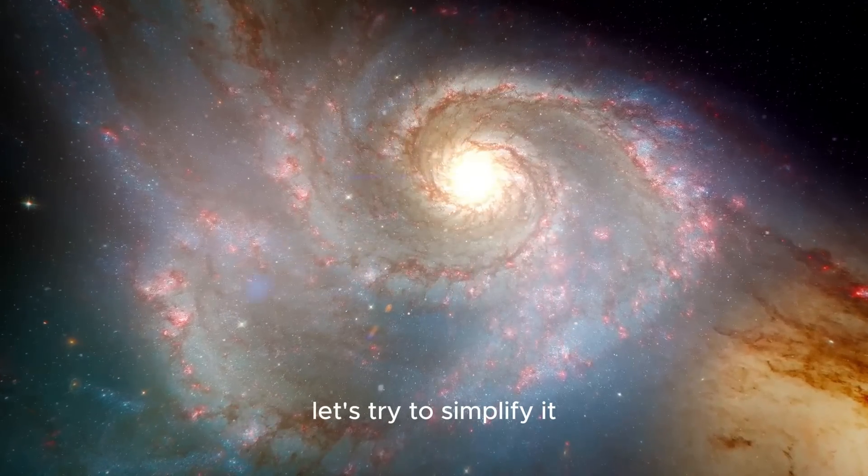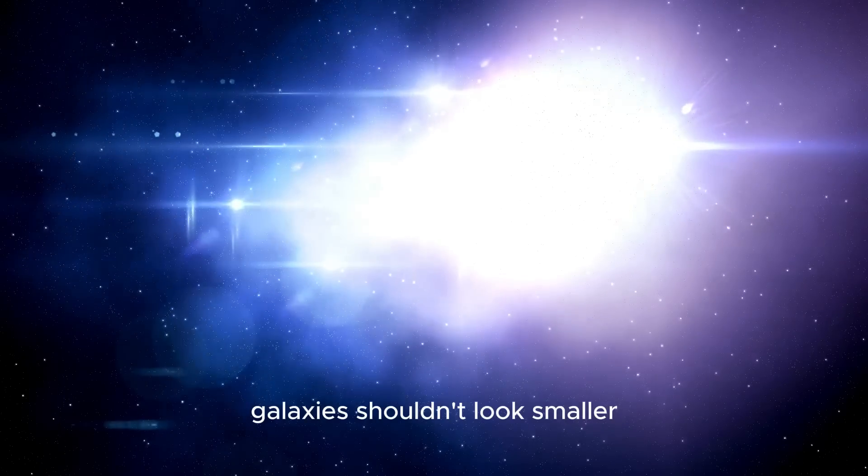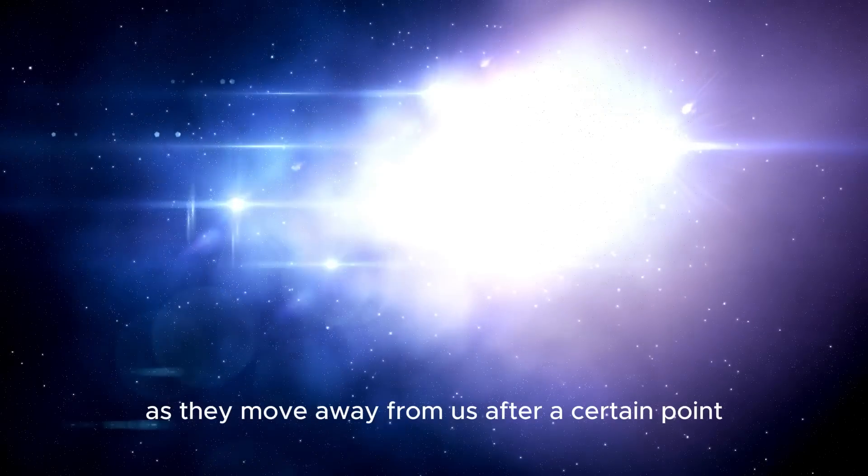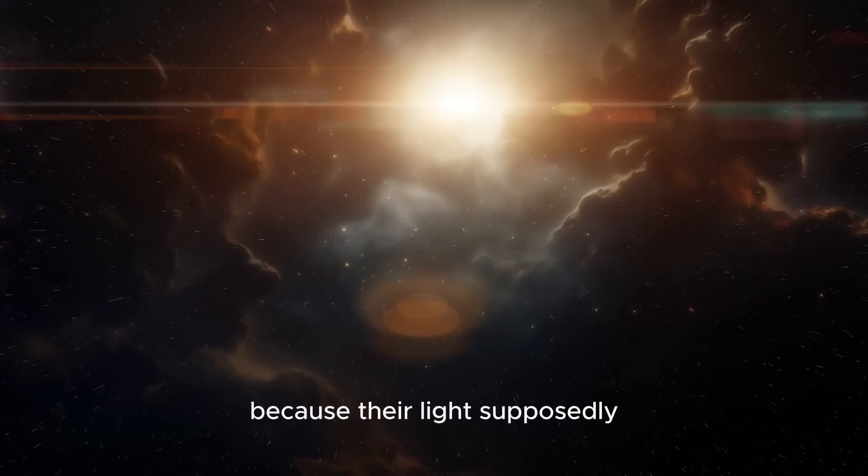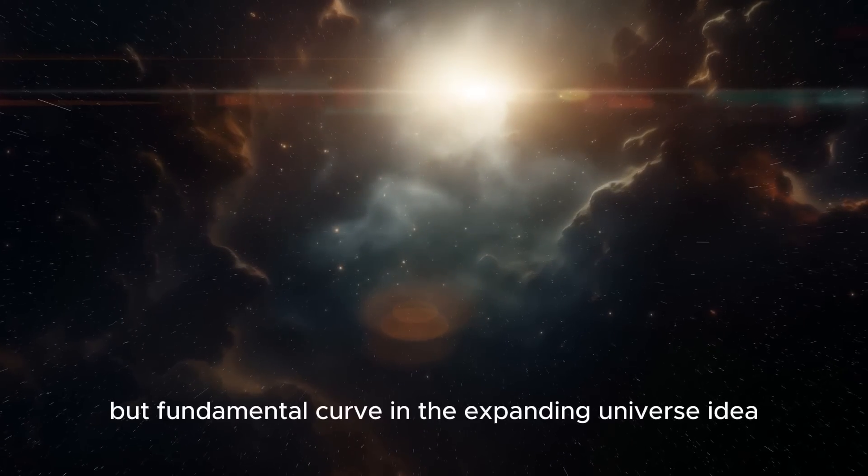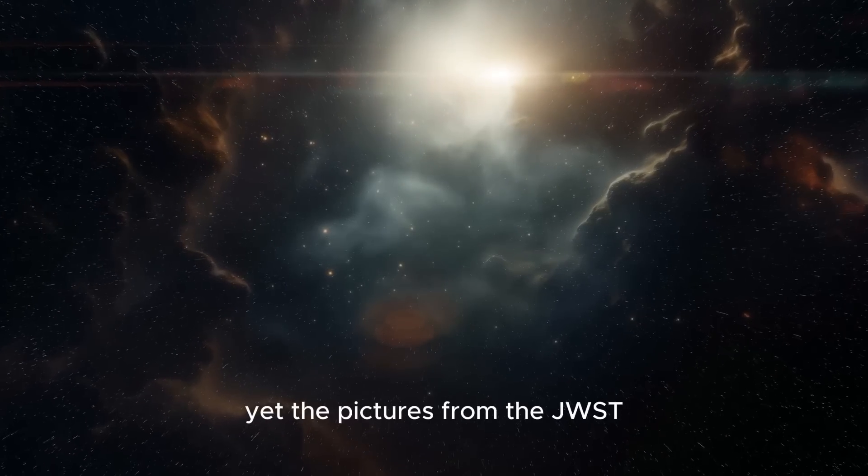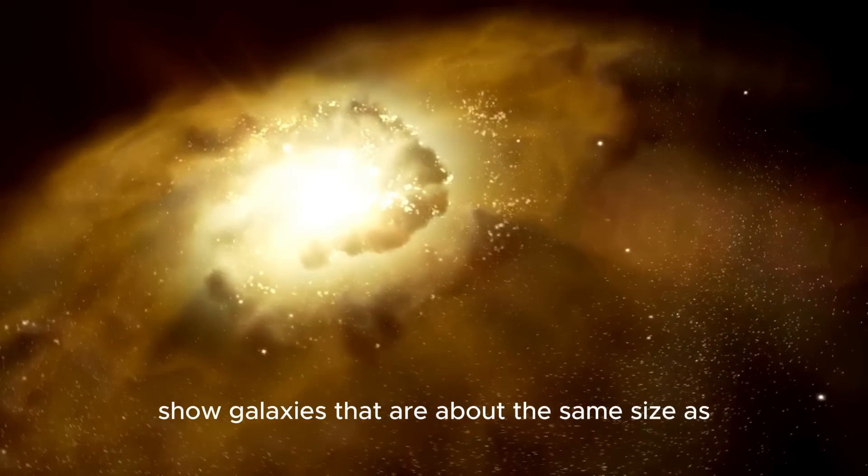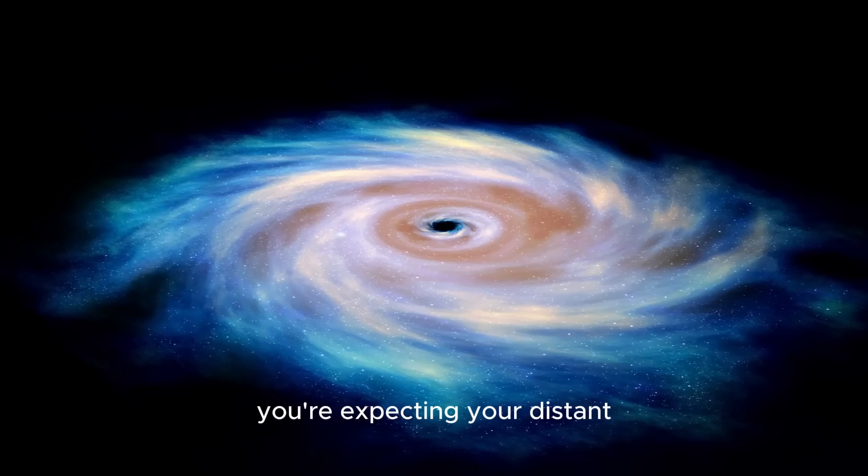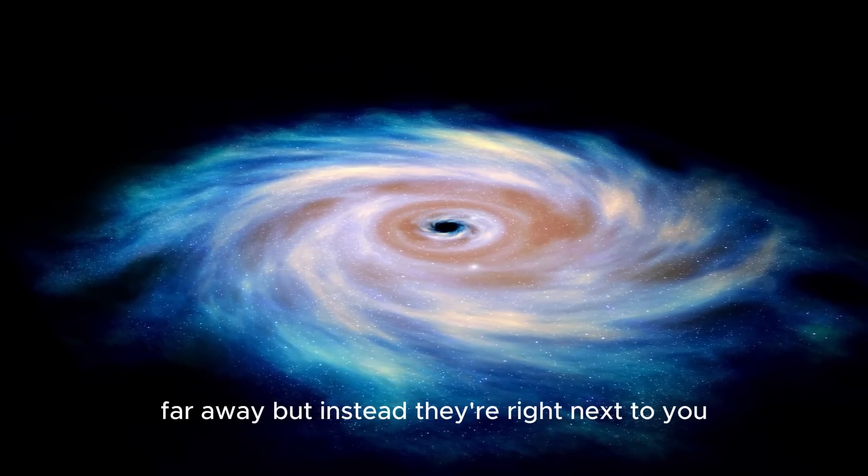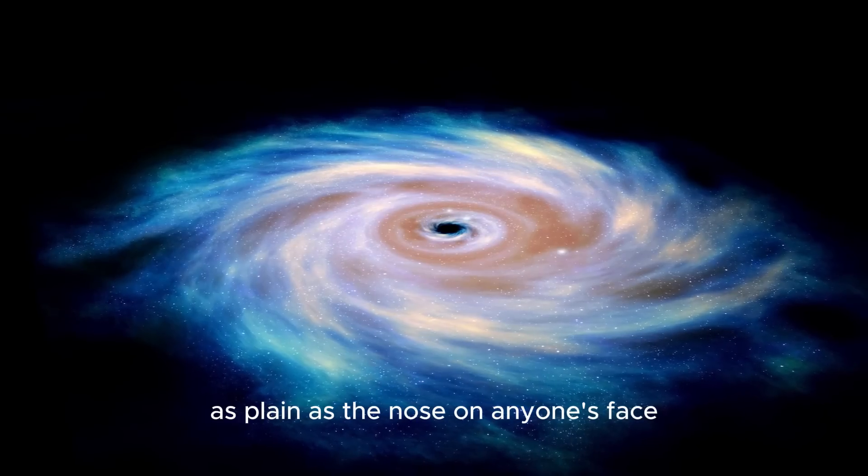Let's try to simplify it. If you imagine the universe as an expanding balloon, galaxies shouldn't look smaller as they move away from us. After a certain point, they should start looking larger because their light supposedly left them when they were closer. It's a strange but fundamental curve in the expanding universe idea. Yet, the pictures from the JWST show galaxies that are about the same size as the ones near us. It's like you're expecting your distant friends to appear as little specks far away, but instead, they're right next to you, as plain as the nose on anyone's face.